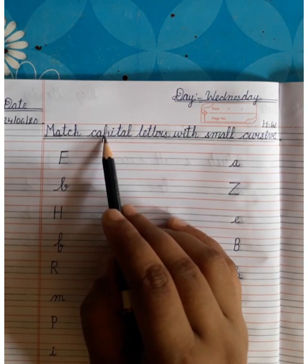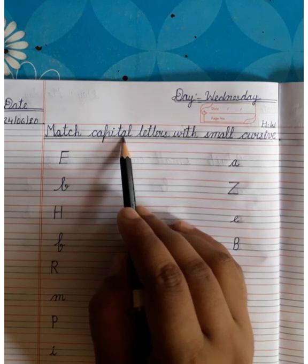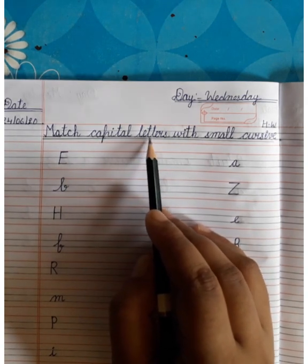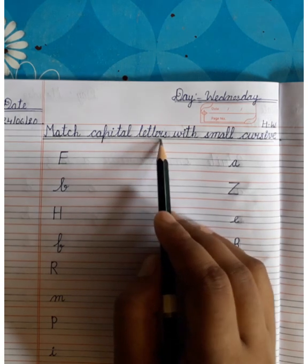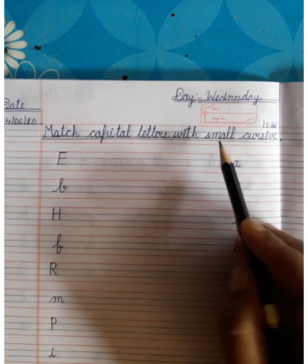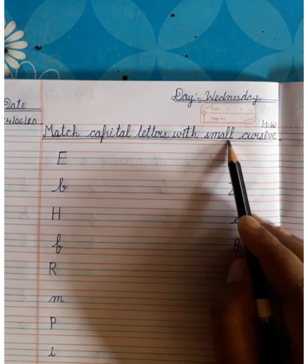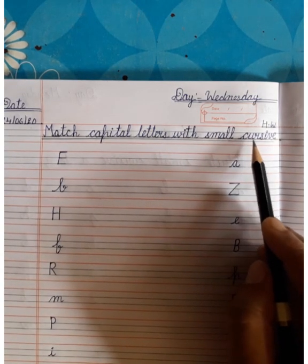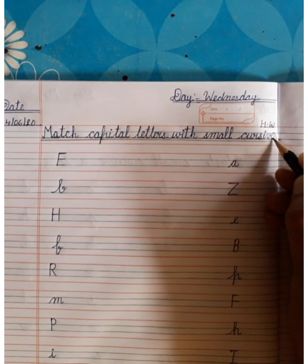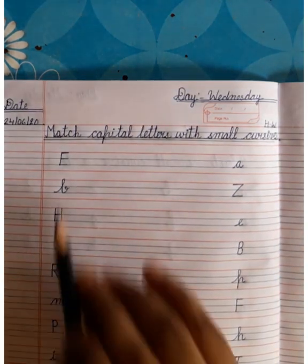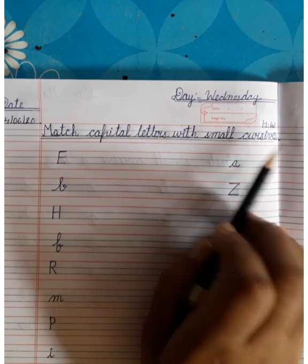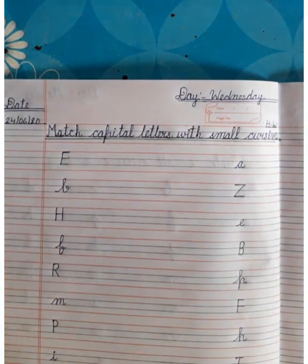Capital Letters with Small Cursive. The full heading is: Match Capital Letters with Small Cursive. Match capital letters with small cursive, and draw the underline also.